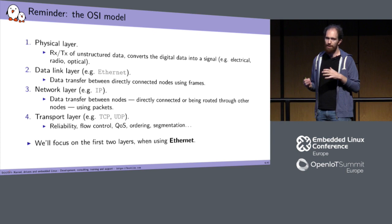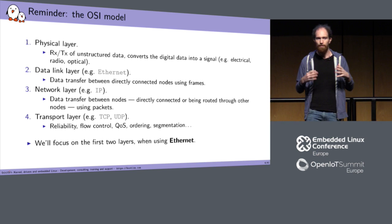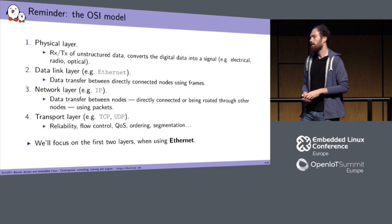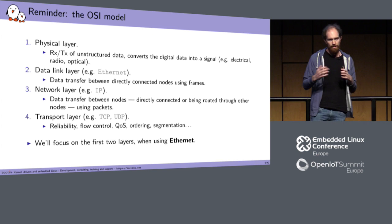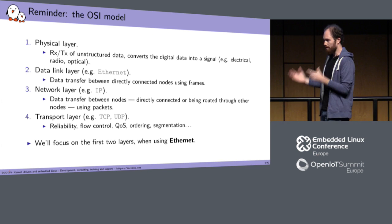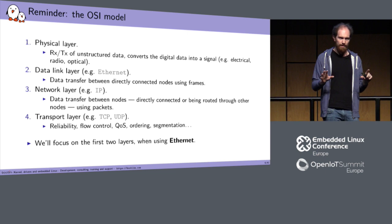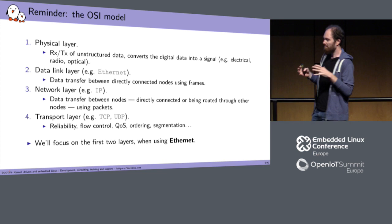The physical layer is really dependent on the medium used, because you can have many different physical mediums — electrical, radio, optical. On top of it, you have the data link layer, such as Ethernet. The data link layer is responsible for connecting two devices and transmitting data between them using what we call a frame, which structures the raw data with additional information needed to understand what is being transmitted.